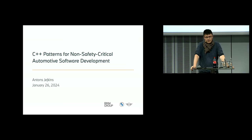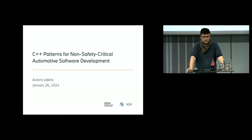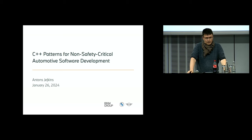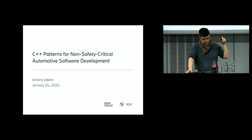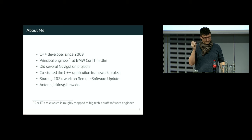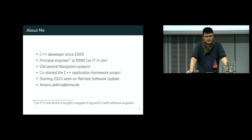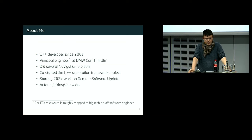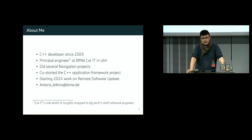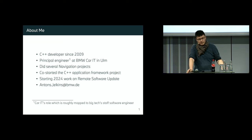Today we will talk about C++ patterns and how we develop non-safety critical applications at BMW. My name is Anton Jelkin. I joined BMW almost 10 years ago and I am currently a principal engineer at BMW Carity in Ulm, about 150 kilometers from here. When I joined the company, I was mostly doing navigation projects. Then a couple of years ago, I co-started the C++ application framework project to promote code reuse and standardize software development.